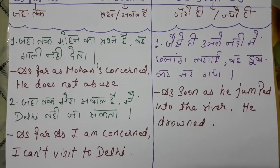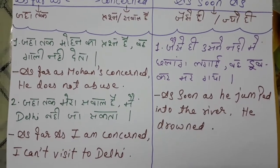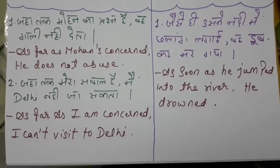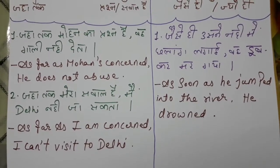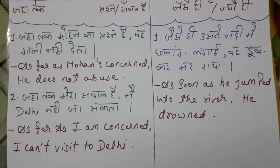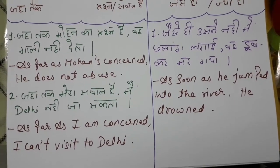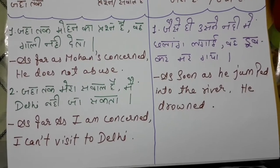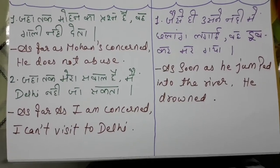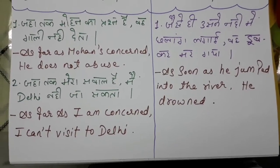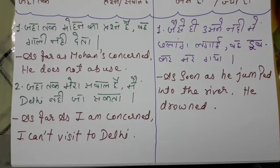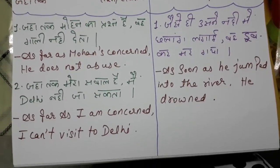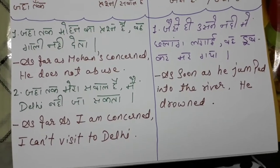So the full sentence is: 'As far as Mohan is concerned, he does not abuse.' Second example — 'jahaan tak mera sawal hai, main Dilli nahi ja sakta.' In English: 'As far as I am concerned, I cannot visit Delhi.' Simple as that.